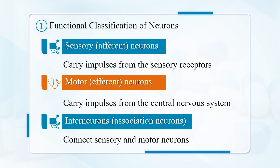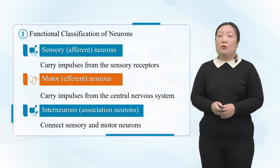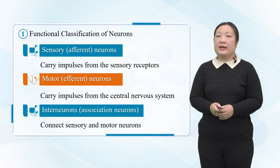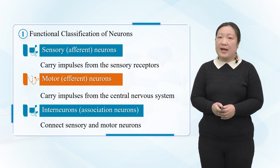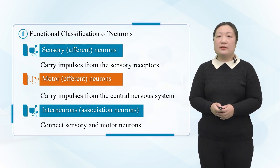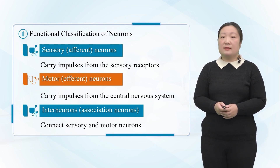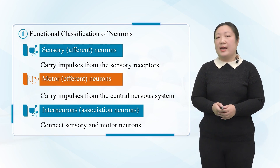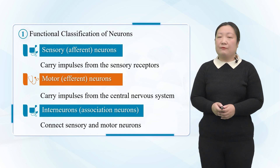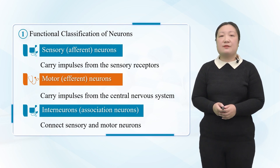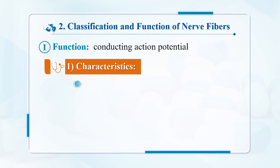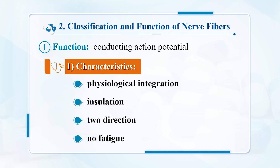Now we will teach you some characteristics of nerve fiber conduction. The first one is physiological integrity. The second is insulation. The third is bidirectionality. The fourth is relatively fatigue-free. The speed of nerve fiber conduction has a close relationship with diameter, myelin sheaths, thickness of myelin sheaths, and temperature.